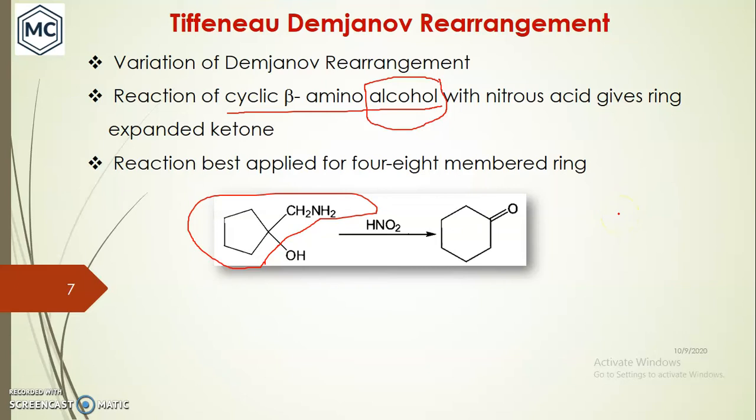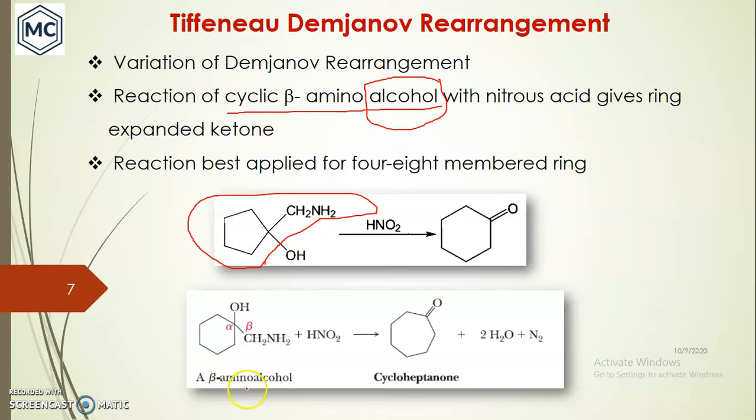This reaction is best applied for 4 to 8-membered rings. The first example is a 5-membered ring beta-amino alcohol that undergoes ring expansion to give cyclohexanone. The second example is another beta-amino alcohol with a 6-membered ring (cyclohexane) that forms an expanded product, cycloheptanone, by releasing nitrogen and water.